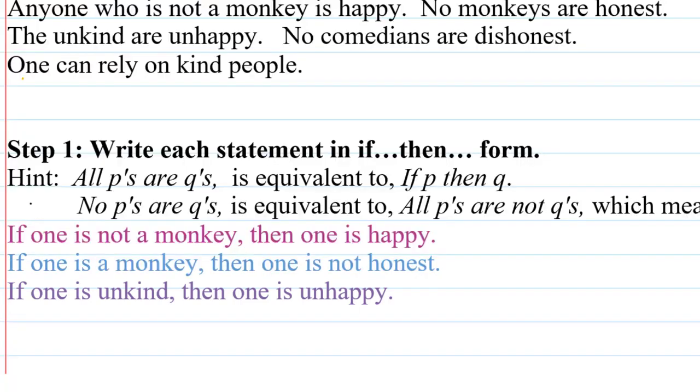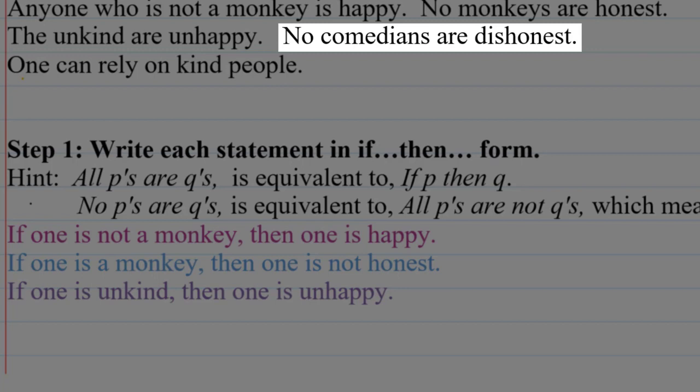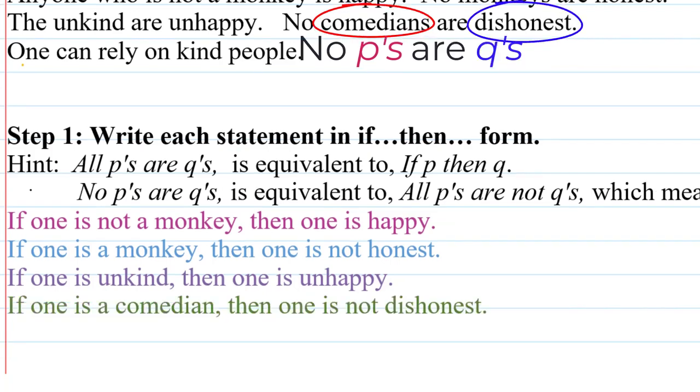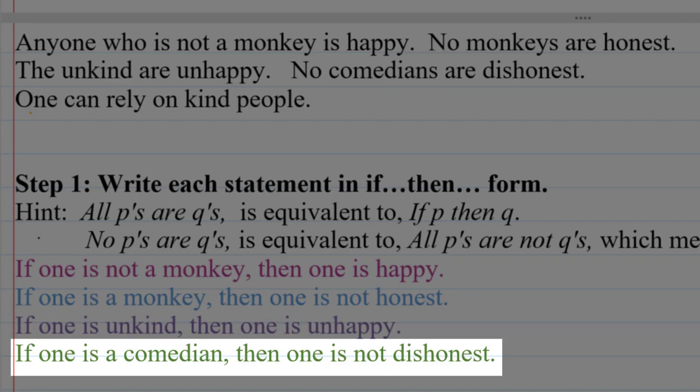Next we have 'no comedians are dishonest,' which fits the 'no P's are Q's' pattern that we translate into 'if P then not Q,' where P is being a comedian and Q is being dishonest. So we have: if one is a comedian, then one is not dishonest.